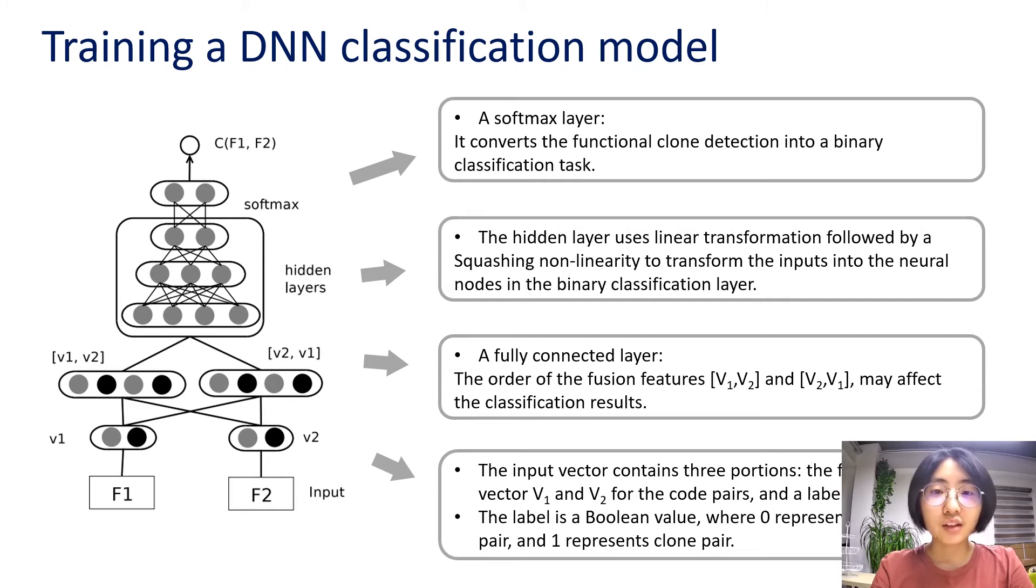Then, there is a fully connected layer. It is to avoid the effect of the fusion features order. Then, the hidden layer uses a linear transformation followed by a sigmoidal non-linearity to transform the inputs into narrow nodes in the binary classification layer. Finally, there is a softmax layer, which converts the functional code clone detection into a classification task.